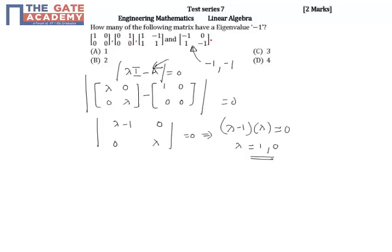The only matrix with eigenvalue minus 1 is this one. In fact, both eigenvalues are minus 1 for this matrix.